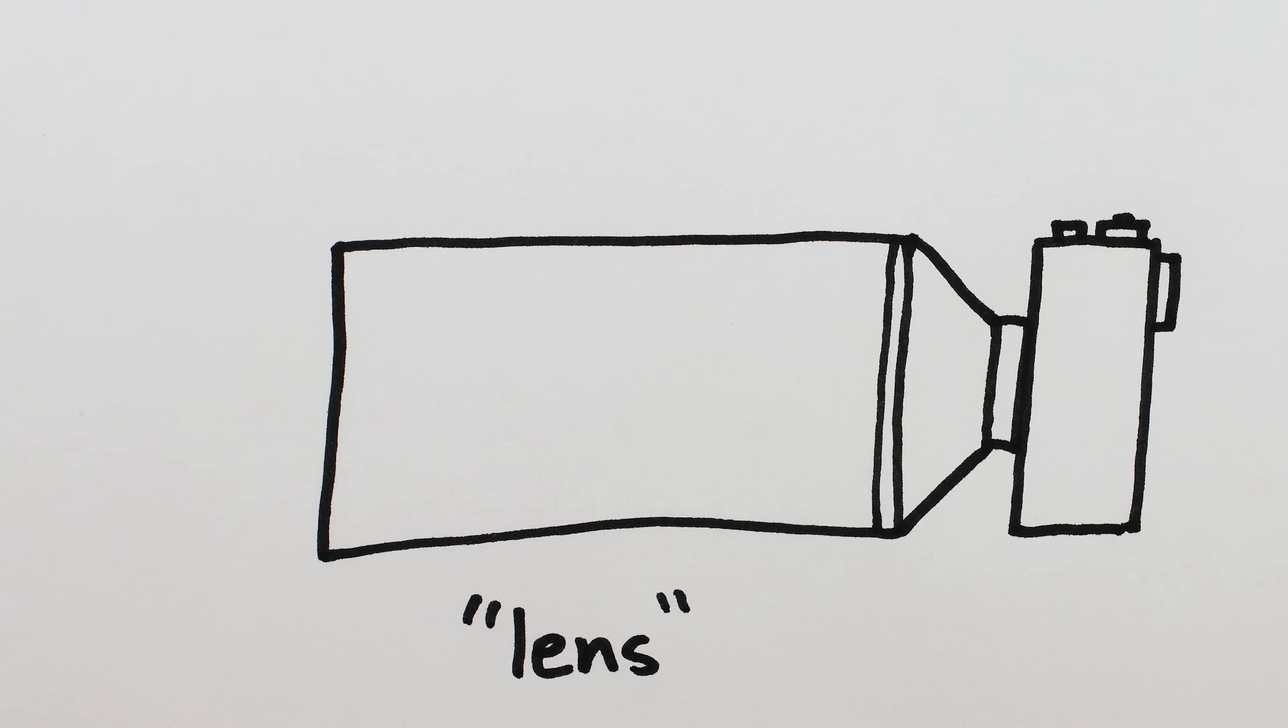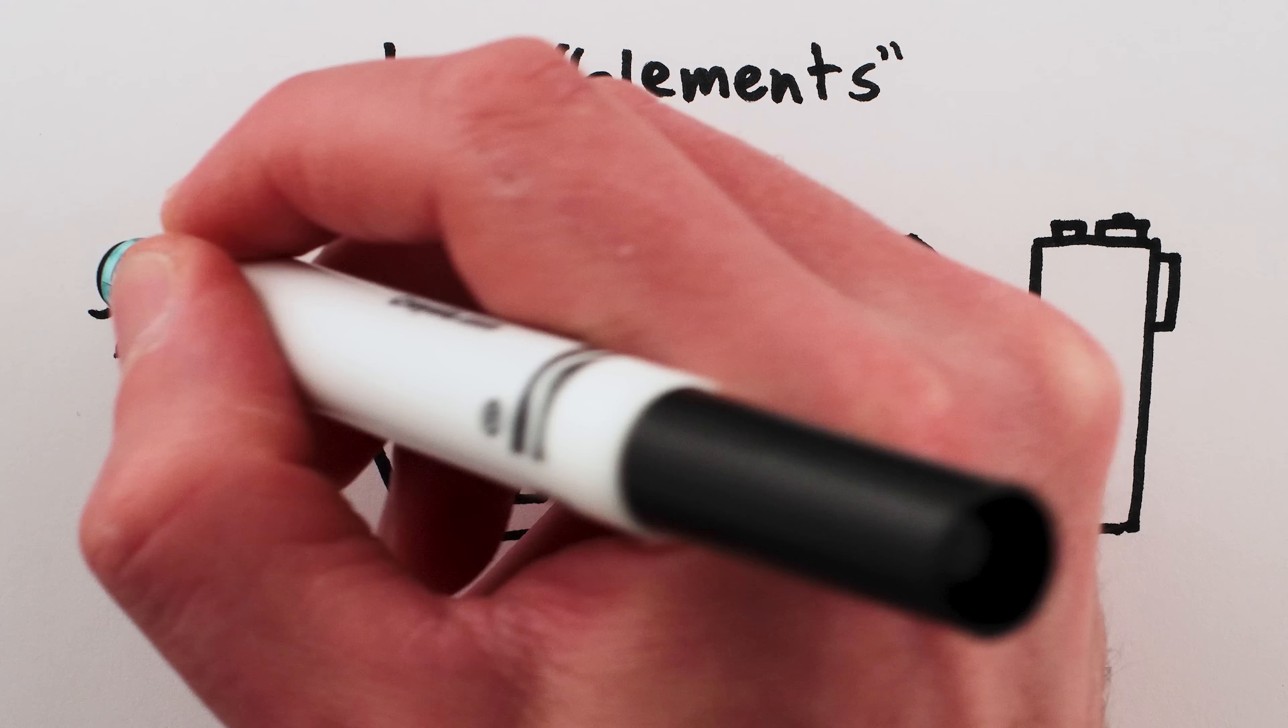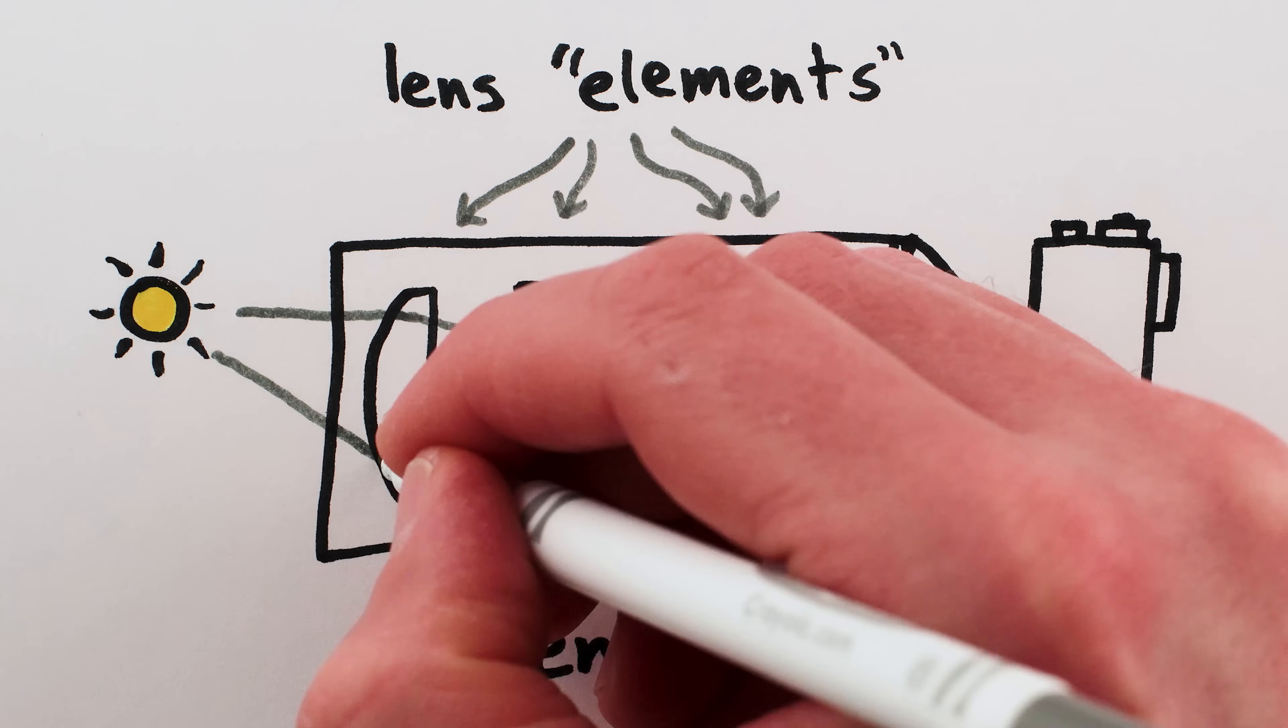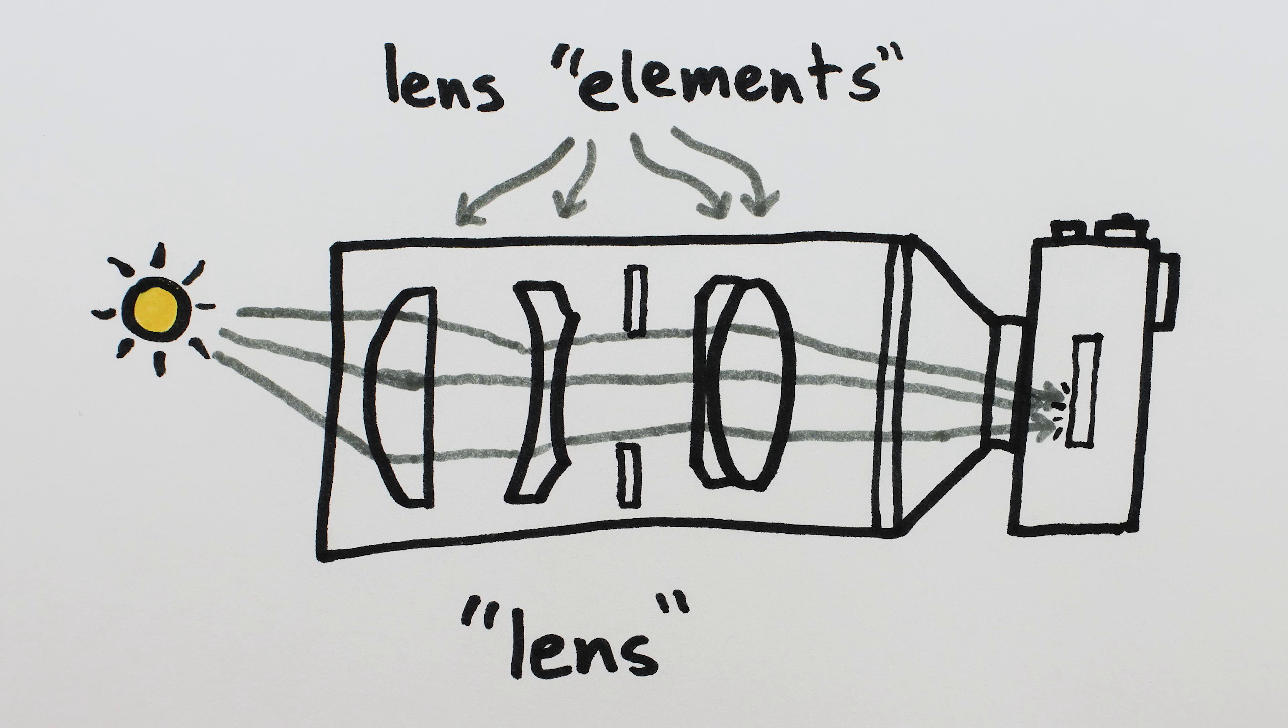Most modern camera lenses are actually multiple glass lenses, called lens elements, working together to function as a single optical device. In a perfect world, all the light falling on a lens would be bent in exactly the way the designers intended, passing through each lens element and reaching the image sensor or film to create an image.